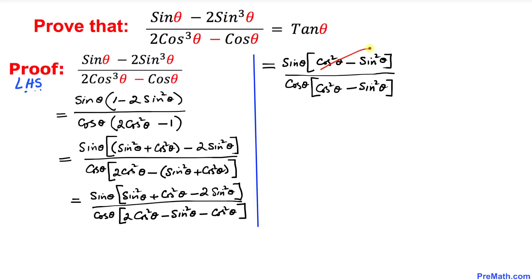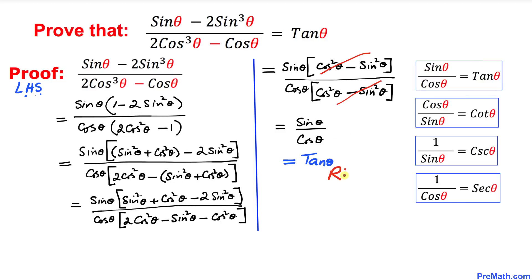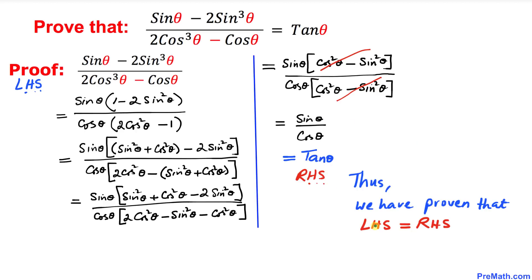We can see that cosine square theta minus sine square theta in the numerator and the same expression in the denominator cancel each other out, so we simply end up with sine theta divided by cosine theta. From our table of trigonometric identities, sine theta divided by cosine theta equals tangent theta. So this equals tangent theta, which is exactly our right hand side. Thus we have proven that the left hand side is indeed equal to the right hand side — and that's our proof.